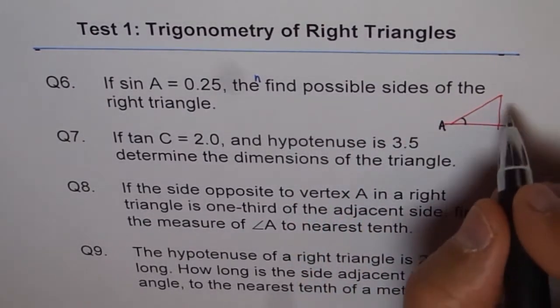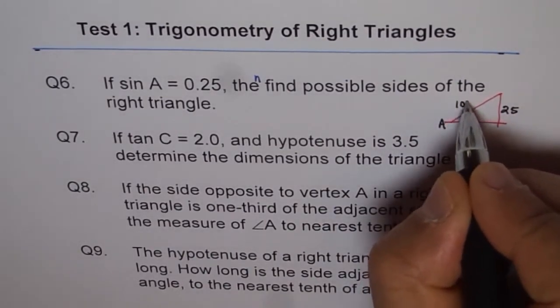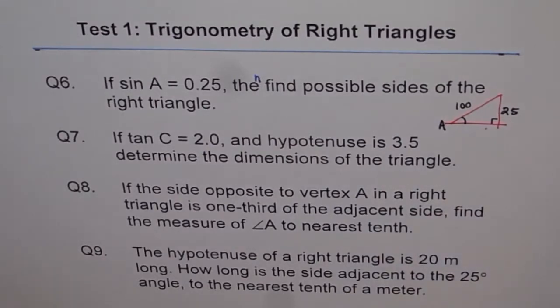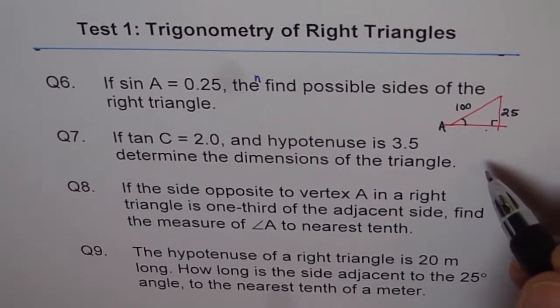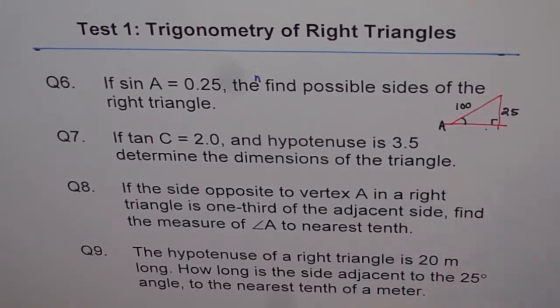What we can do to find possible sides is write this as 25 and write this as 100, and we can always find the third side from here: 100 squared minus 25 squared, then square root. There are many different solutions. That is a good strategy: whenever you are given trigonometric ratios, just make a triangle and write down the ratios.